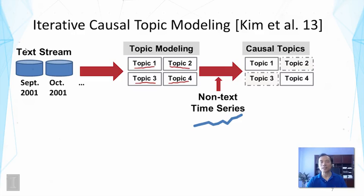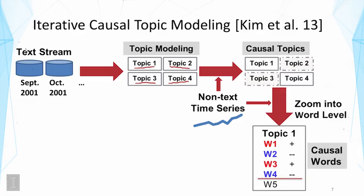We could stop there — that would be the simple approach described earlier. But those topics are unlikely to be very good because they are general topics explaining the whole text collection. So we zoom into the word level, looking at the top-ranked words for each topic. Taking topic one as the target, we know it's correlated with the time series, and there must be some words highly correlated with the time series — for example, w1 and w3 might be positively correlated.